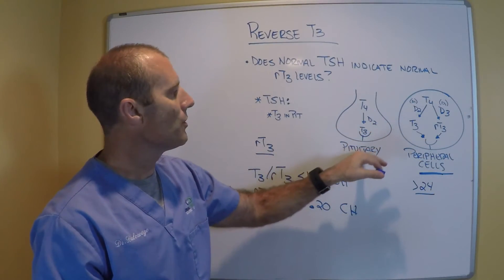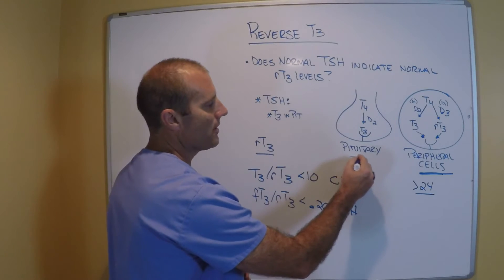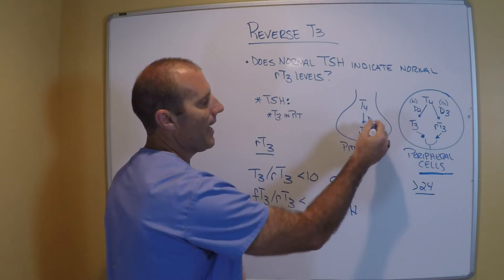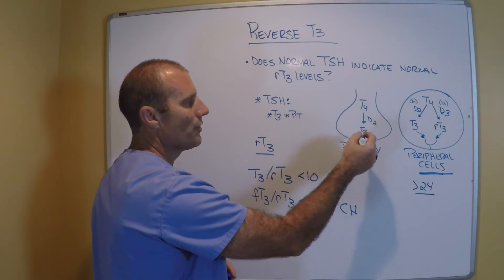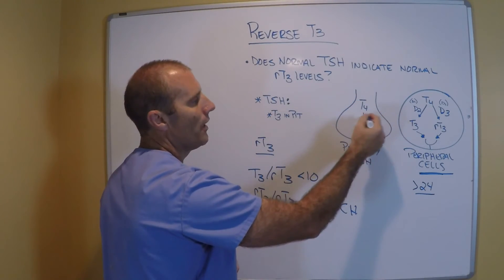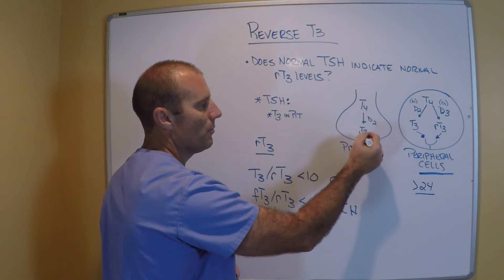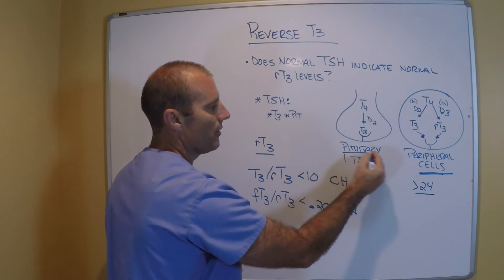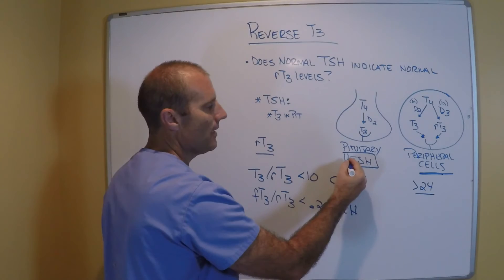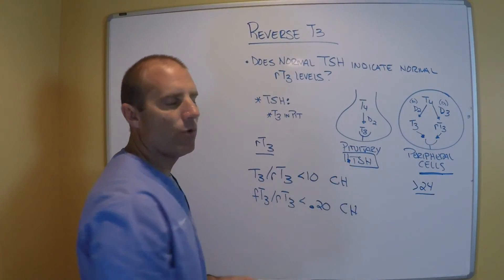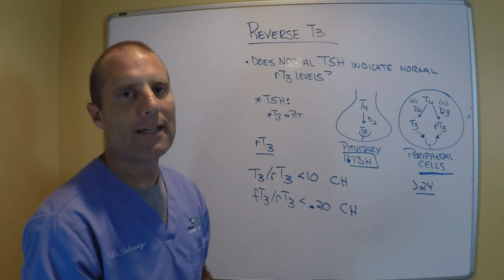The pituitary gland, which is what the doctor's looking at with just the TSH, does not have D3 to make any reverse T3. So of course, T4 under D2 only will be converted to T3. It will saturate the pituitary gland telling the brain, hey, we don't need TSH. So we don't need any more T4. So we're going to lower TSH.